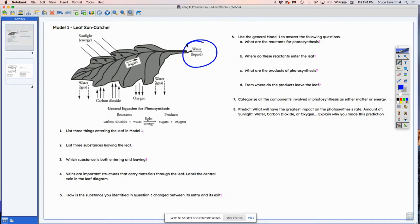And so we are physically talking about the things that are going into the leaf. So we've got water going into the leaf. We have carbon dioxide going into the leaf. And the other thing that's going in is actually acting on the leaf. And that is the energy from the sun.